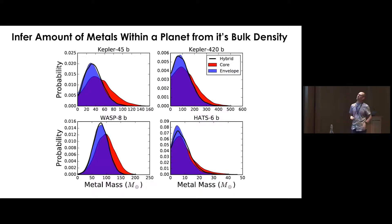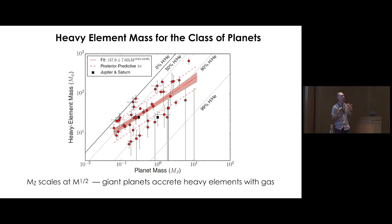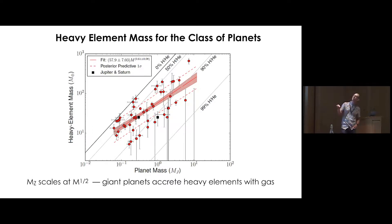We can derive this relation — published about three years ago — showing inferred heavy element mass inside a planet in Earth masses versus planet mass from the structure model. There's good evidence that giant planets have on the order of 10 Earth masses of heavy elements, which agrees well with expectations from the core accretion model of planet formation. As you get to larger planet masses, objects are accreting not just hydrogen and helium but also significant additional metals — tens or even hundreds of Earth masses — while simultaneously accreting hydrogen and helium. Jupiter and Saturn sit nicely within the distribution.